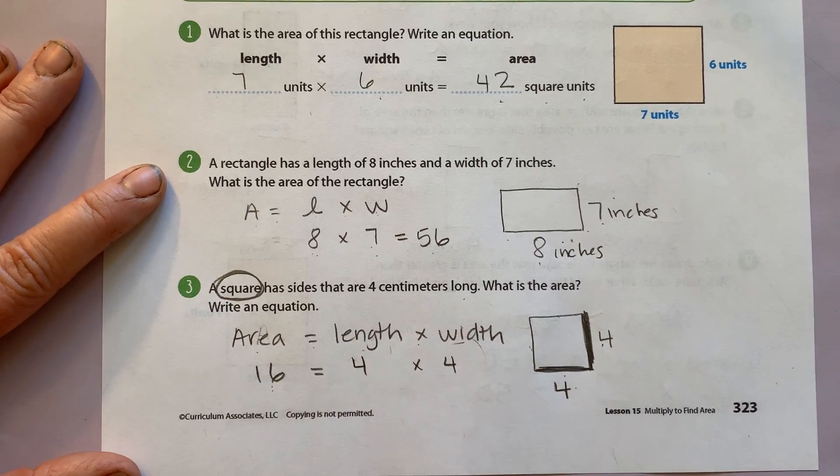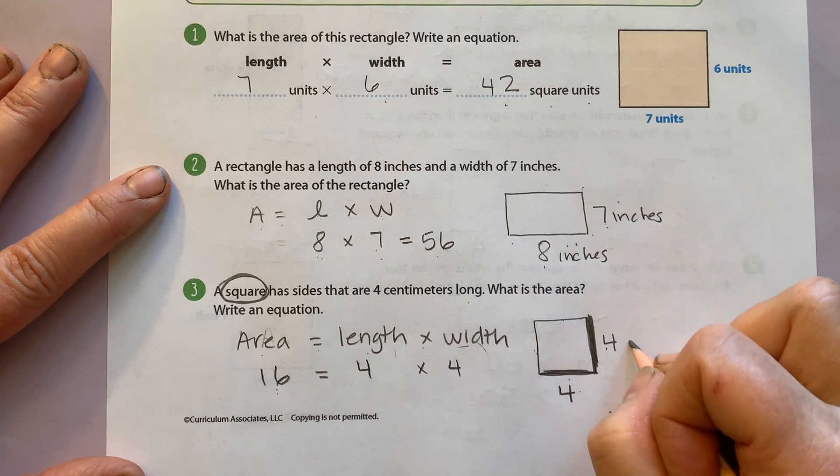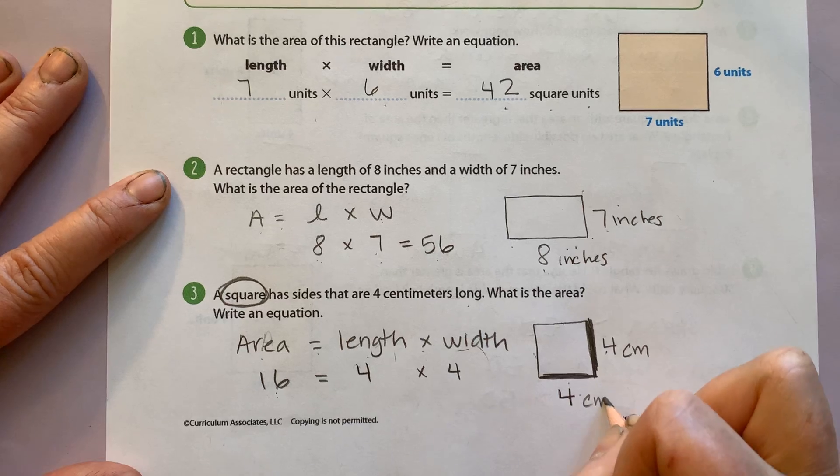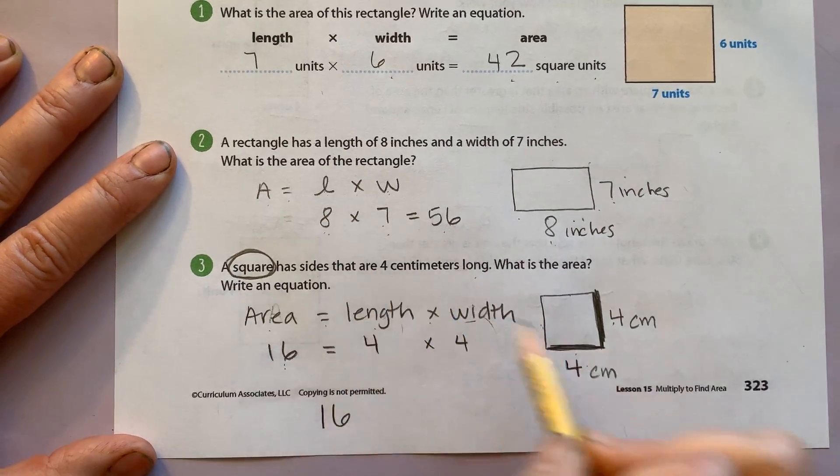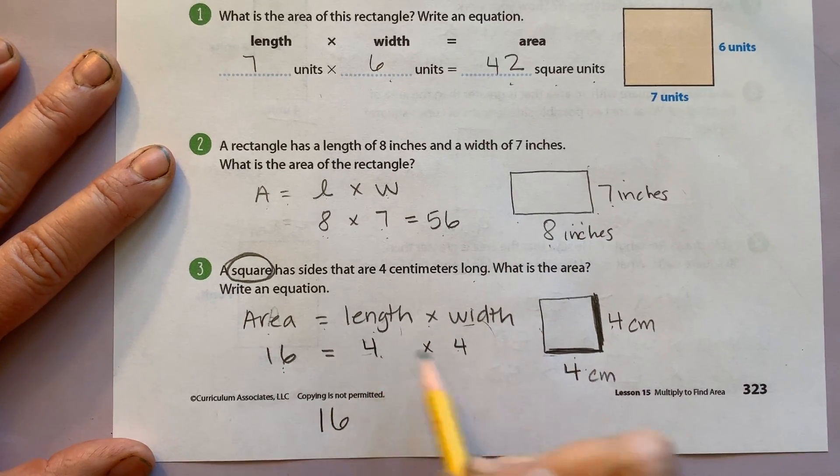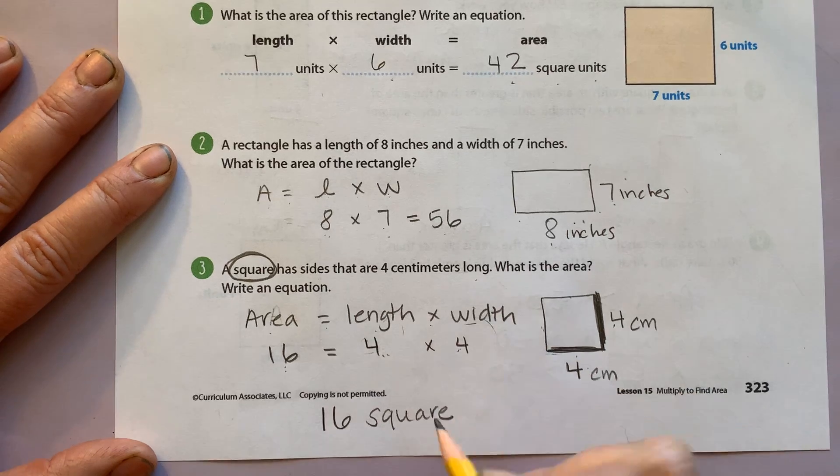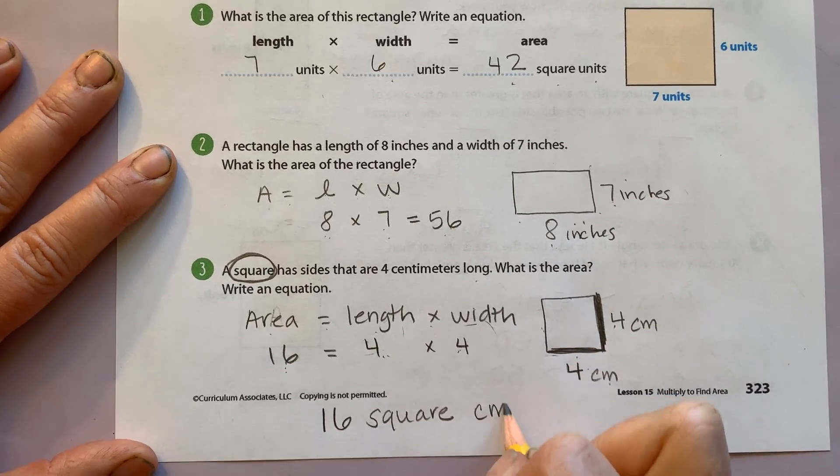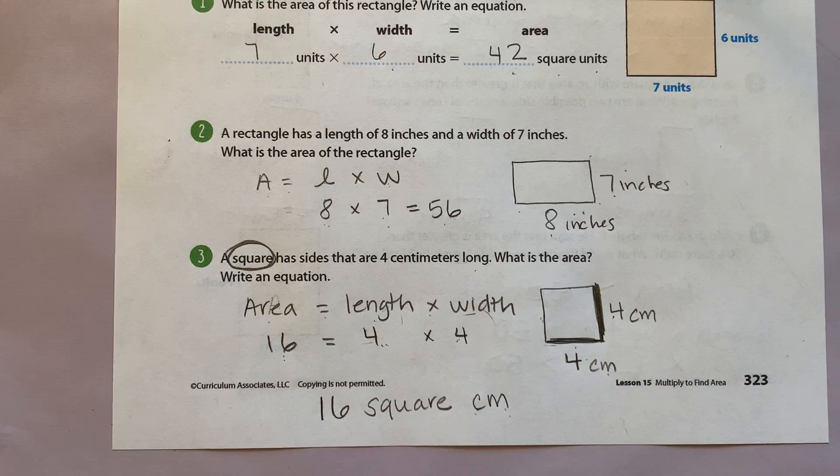Now remember, do you notice something wrong with mine? I'm missing my units. Make sure you put your units in. So if I have the answer of 16, I should be writing 16, and since I've multiplied two sides, I write square. And it's centimeters. Remember, I'm using CM for centimeters because that's the short way mathematicians write it.